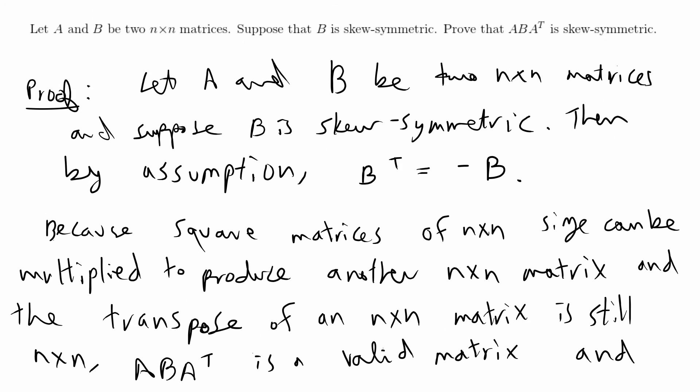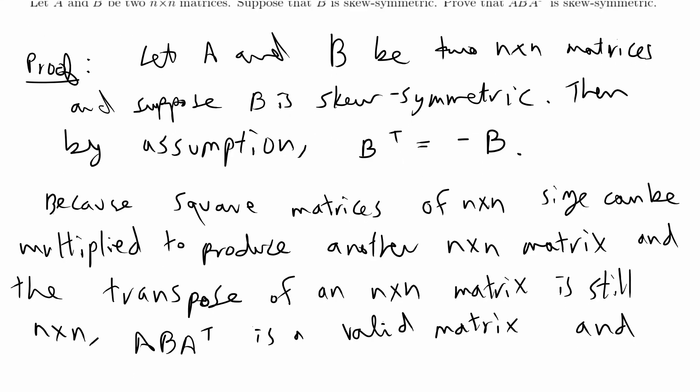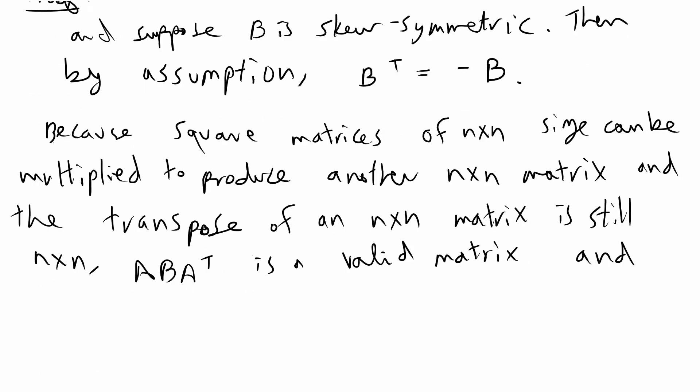What I'm going to do is take the transpose of what we're trying to prove is symmetric, and get that to be equal to negative ABA transpose. If (ABA^T)^T is equal to negative ABA transpose, then it falls in line with the definition of being skew-symmetric, and therefore we are done with the proof.